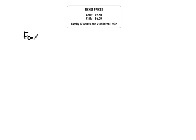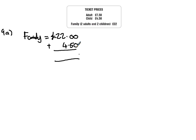Question 9 — we have information about adults, children, and families: two adults and two children. The question asks: he buys two adults and three children and pays the least possible amount. It would be cheaper to buy a family ticket for two adults and two children than individually, so we use a family ticket which equals £22. That covers two adults and two children. Then we add an extra child ticket of £4.50, giving a total of £26.50.